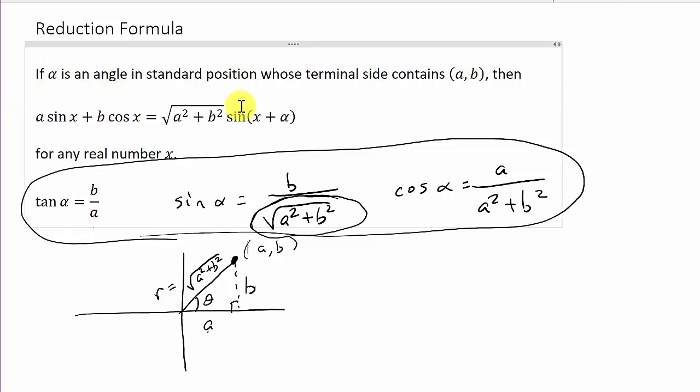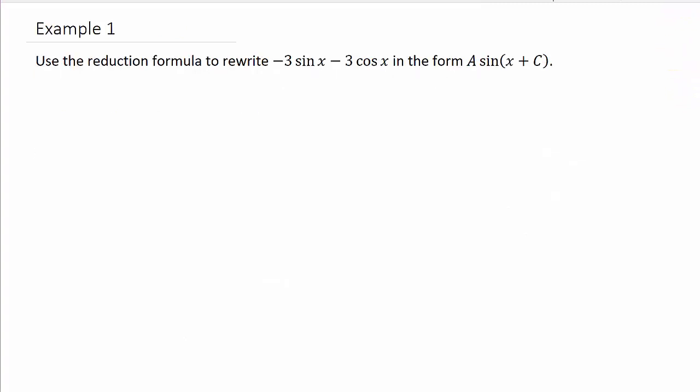Alright. So let's go ahead and get started on the example. So here we have example one. It says use the reduction formula to rewrite negative three sine x minus three cosine x in the form A sin(x + c). And that's the directions. And just know that the A right here, in the formula, that's this part: square root of a squared plus b squared. And then the c represents alpha.